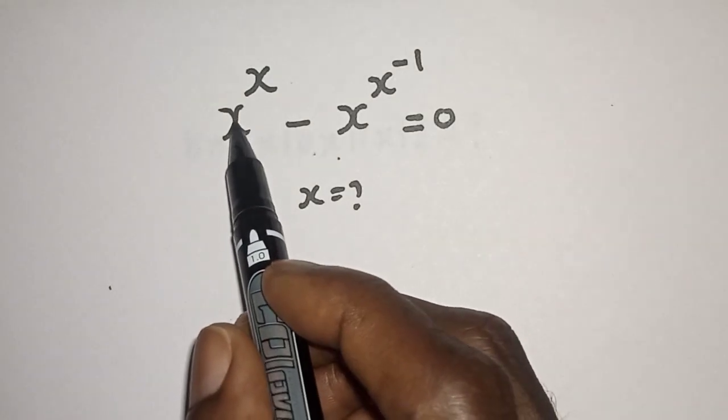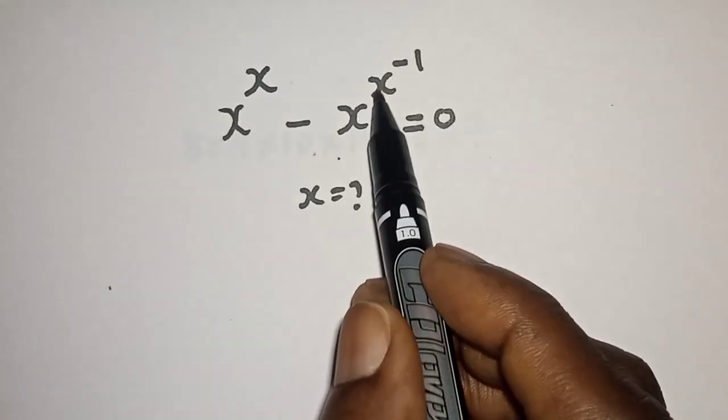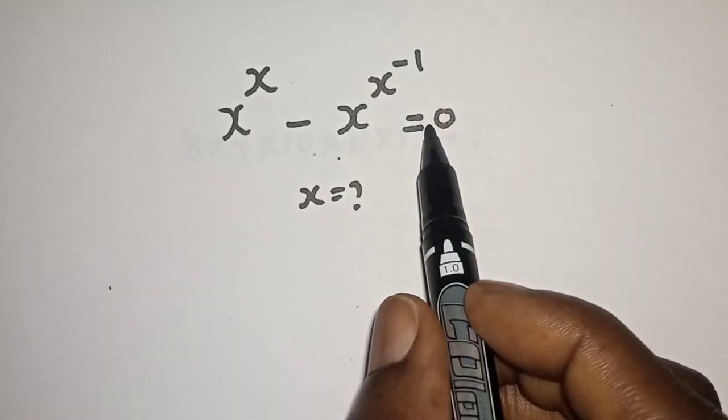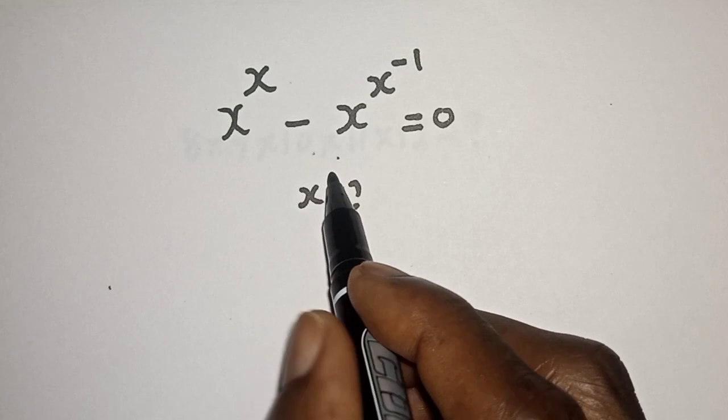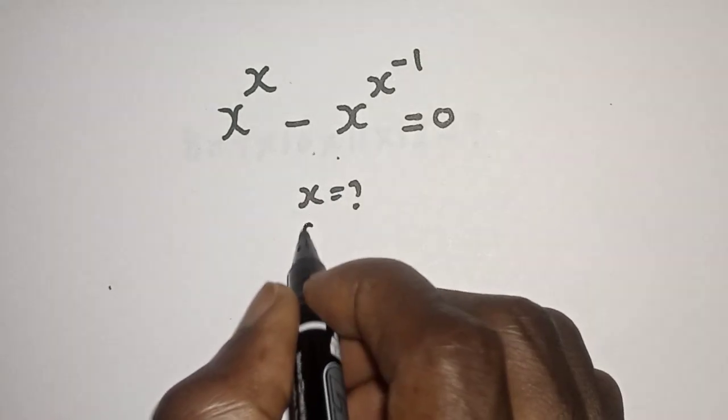Hi everyone, how to solve s raised to power s minus s raised to power s raised to power minus one is equal to zero. What is the value of s? Like, share, comment and subscribe. Solution.